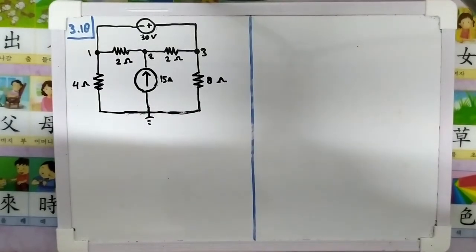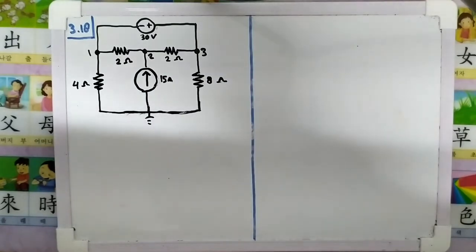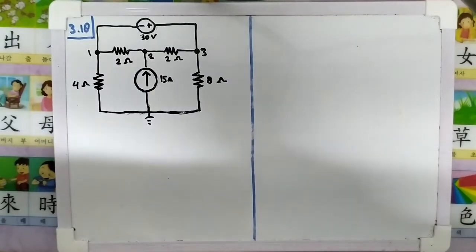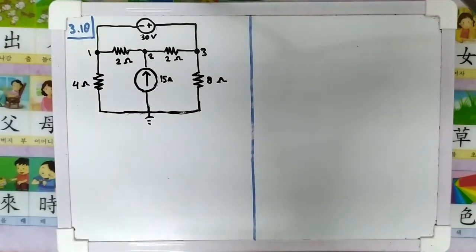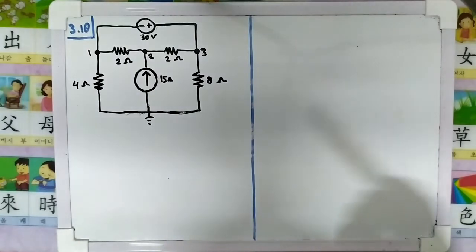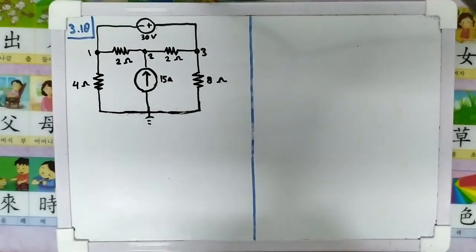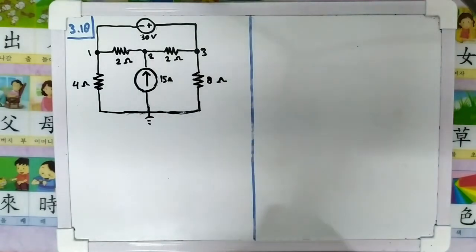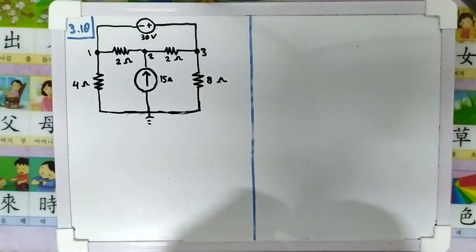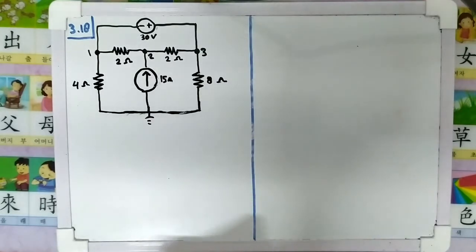Hi everyone, we continue with our problem solving of Sadiqo. We arrive at problem 3.18, which is a circuit problem, and we are asked to find all the node voltages. There are 3 nodes: node 1, node 2, and node 3.